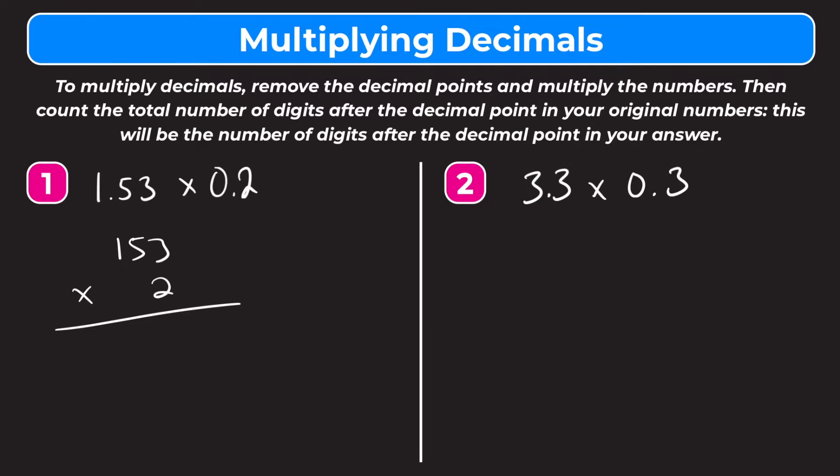So we have 2 times 3, that's 6. 2 times 5 is 10, carry the 1. 2 times 1 is 2, plus 1 is 3. So our answer is 306.